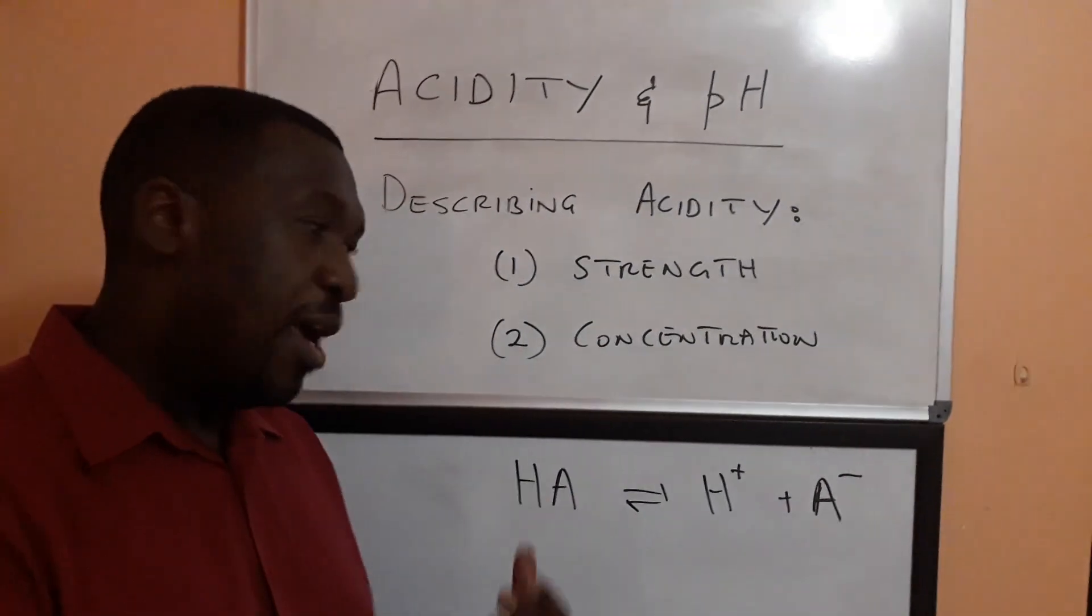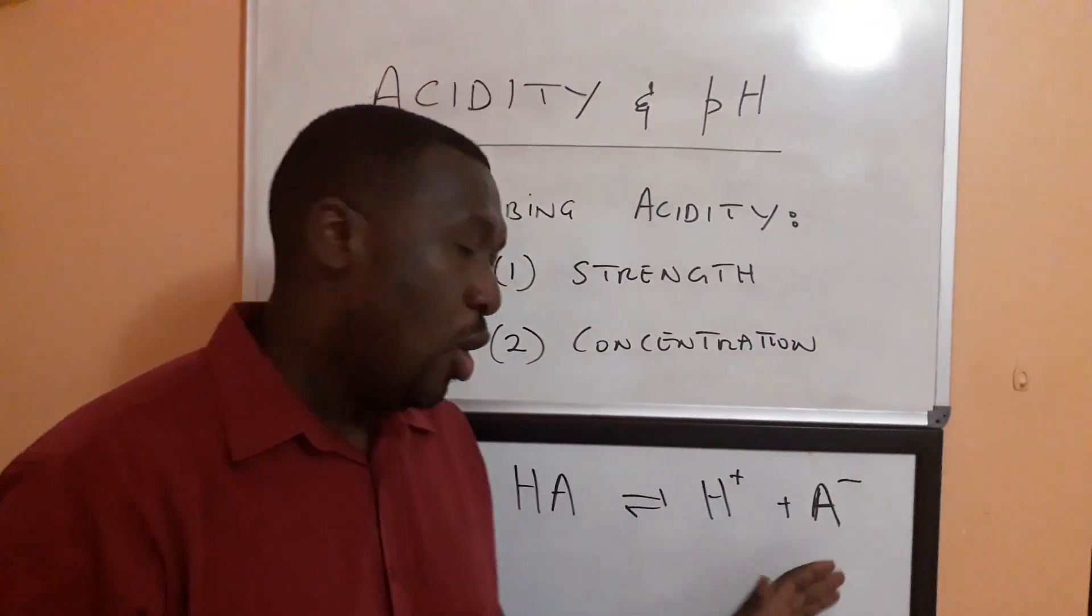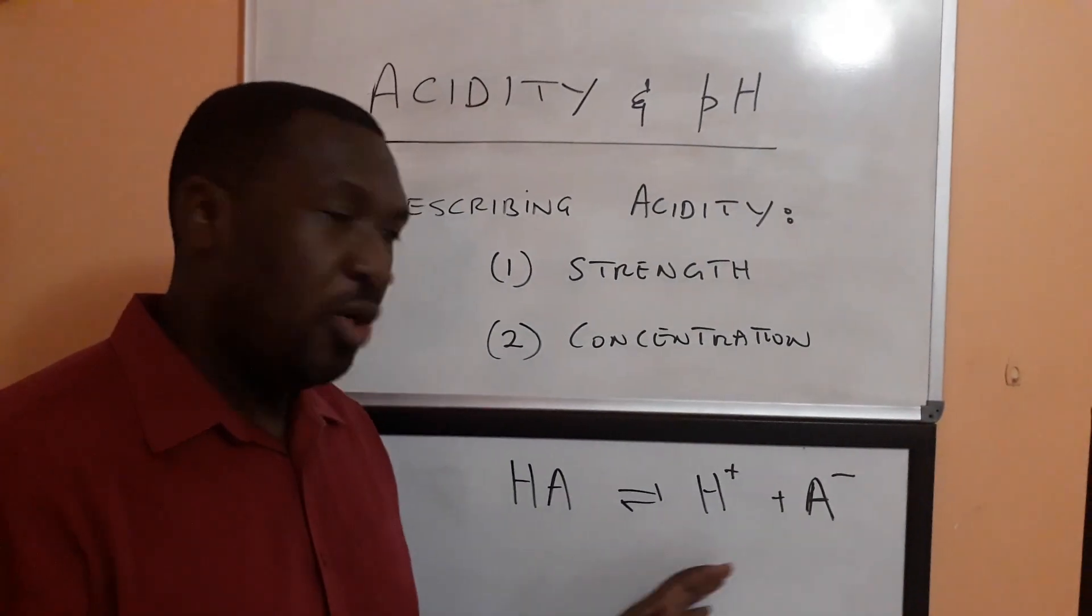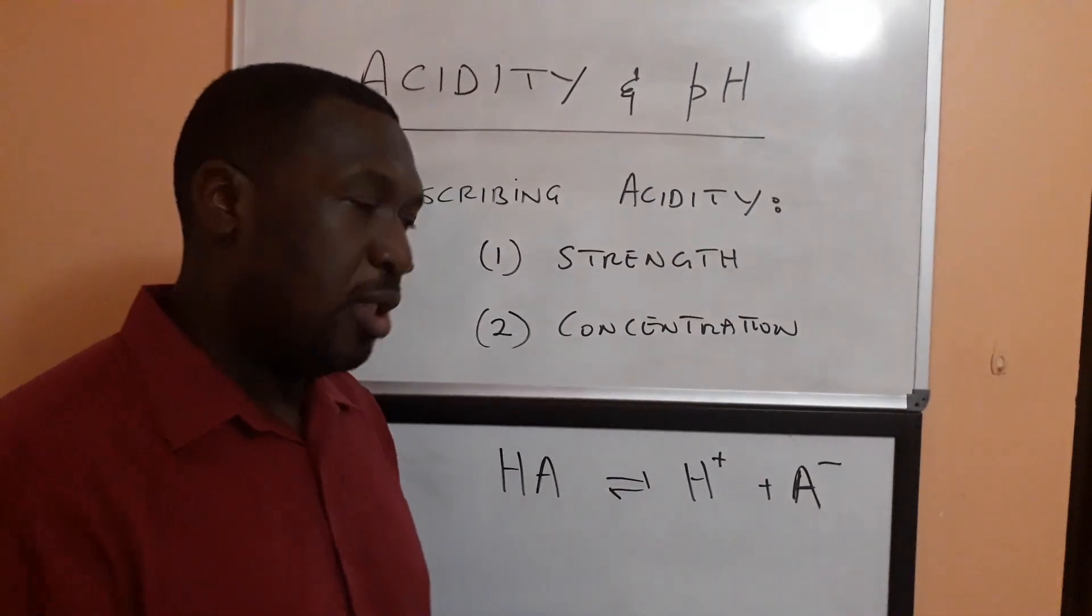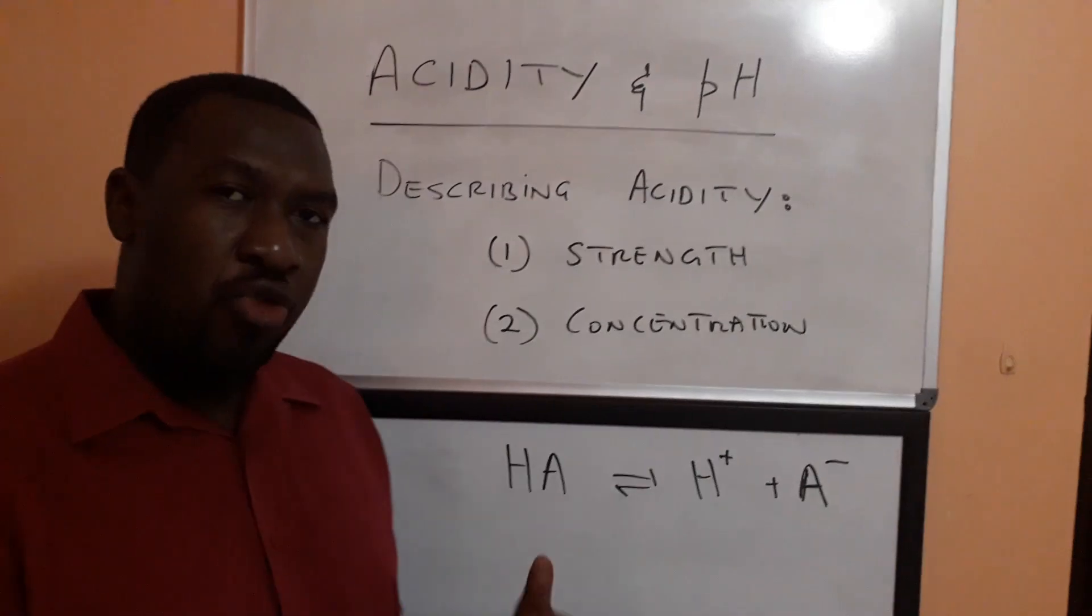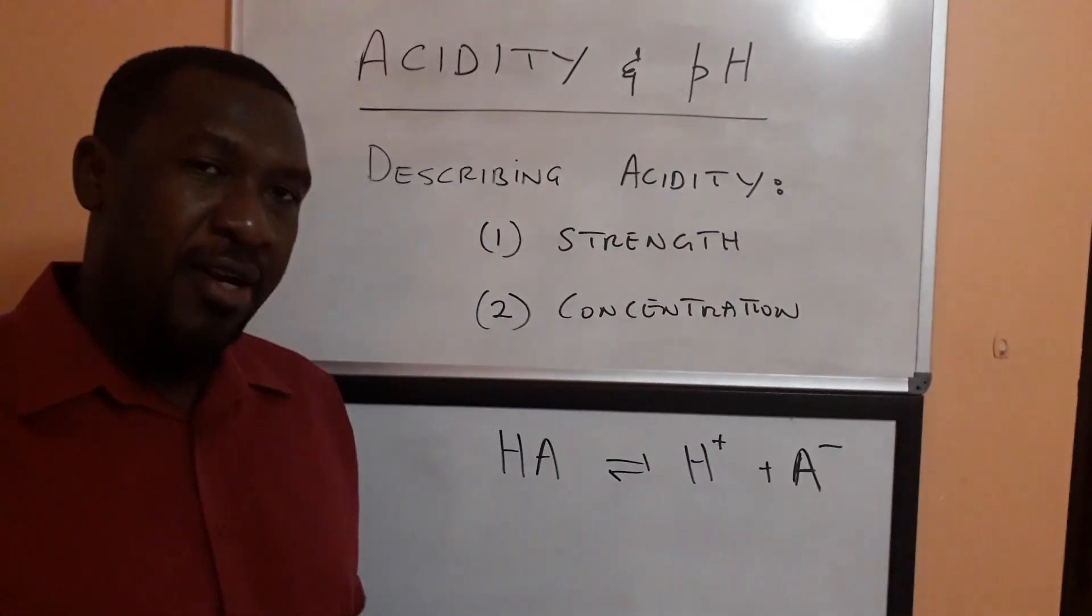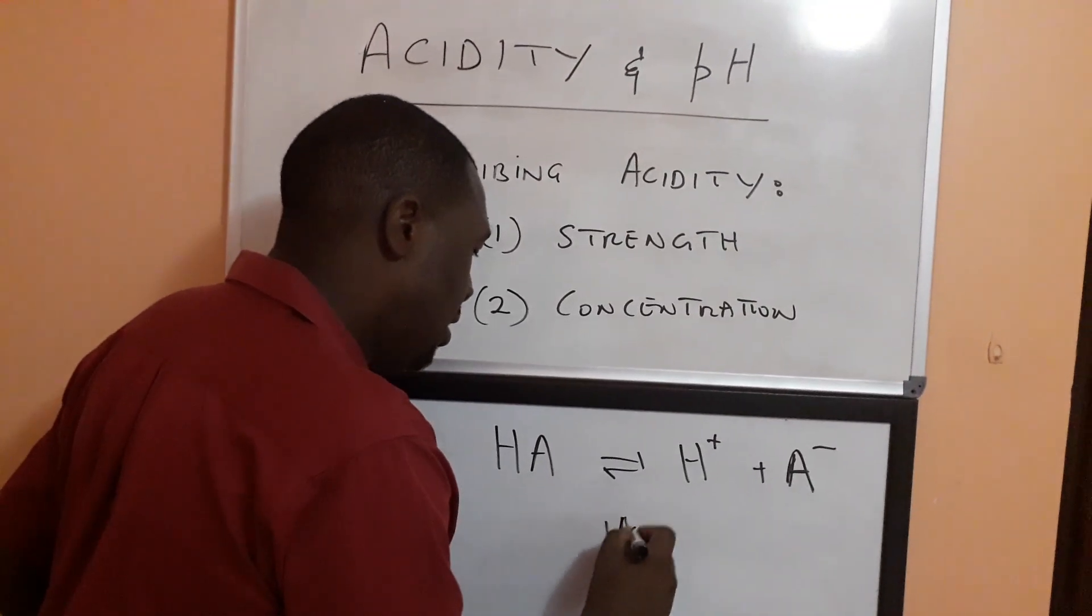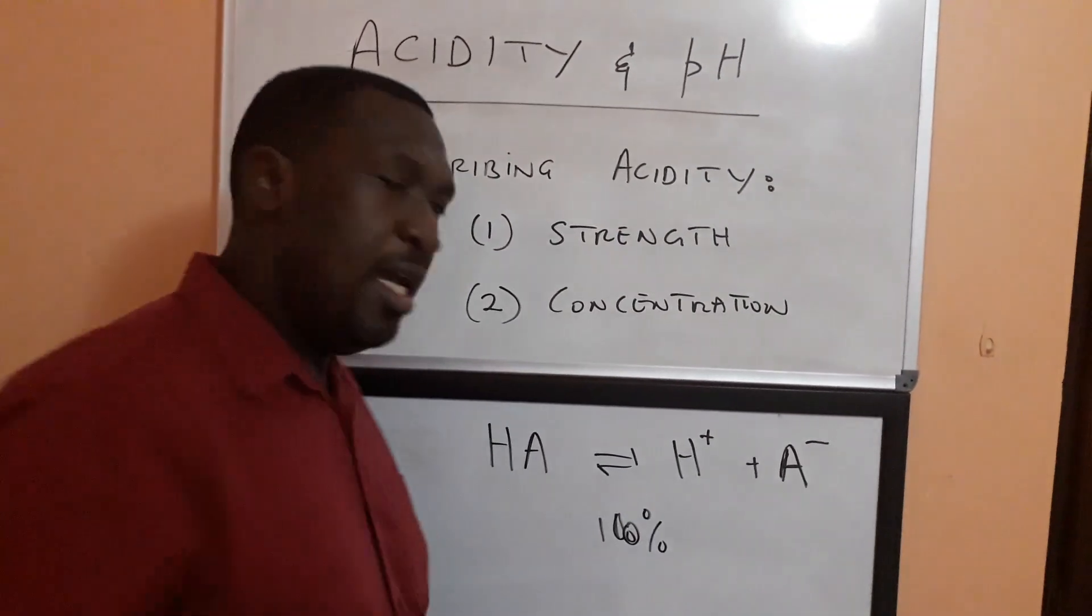Now acid strength describes how dissociated or how ionized an acid is in aqueous solution. In other words when it dissolves in water. So we say strong acids are fully ionized. It means that there is 100% dissociation in aqueous solution.